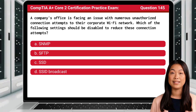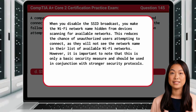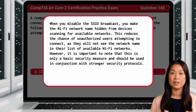Question 145. A company's office is facing an issue with numerous unauthorized connection attempts to their corporate Wi-Fi network. Which of the following settings should be disabled to reduce these connection attempts? The answer is D. SSID Broadcast. When you disable the SSID Broadcast, you make the Wi-Fi network name hidden from devices that are scanning for available networks. This reduces the chance of unauthorized users attempting to connect, as they will not see the network name in their list of available Wi-Fi networks. However, it is important to note that this is only a basic security measure and should be used in conjunction with stronger security protocols.